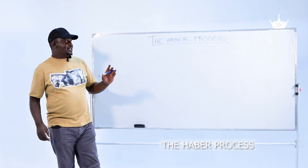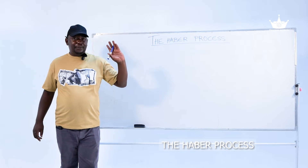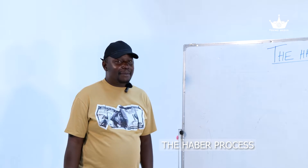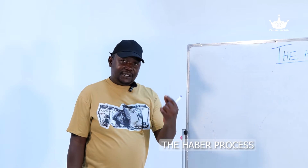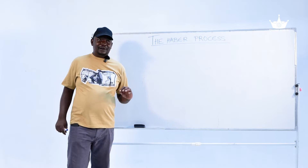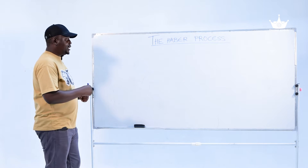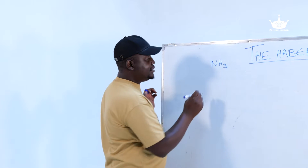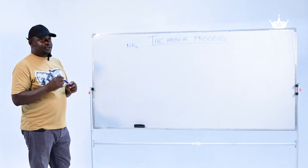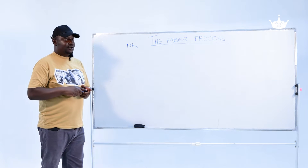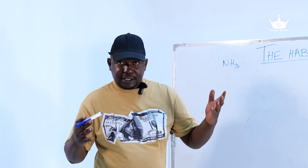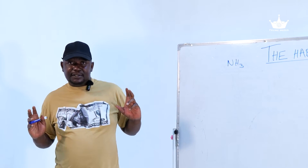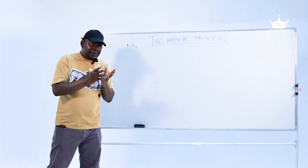In this video, I'm going to be presenting the Haber process. The Haber process from Fritz Haber is a process that is used in the manufacturing of ammonia. Ammonia in chemistry is called NH3. Ammonia is a very important compound to humanity because it produces a variety of beneficial substances for us to survive on the planet.